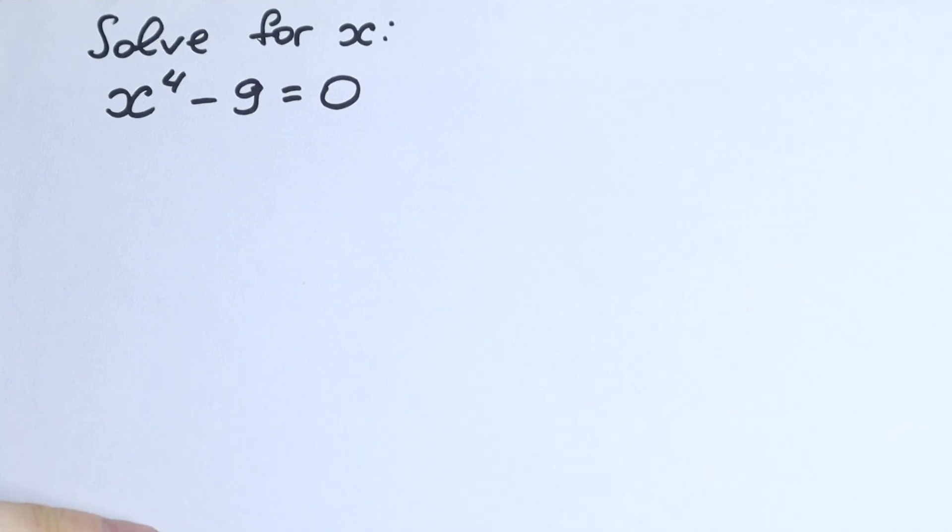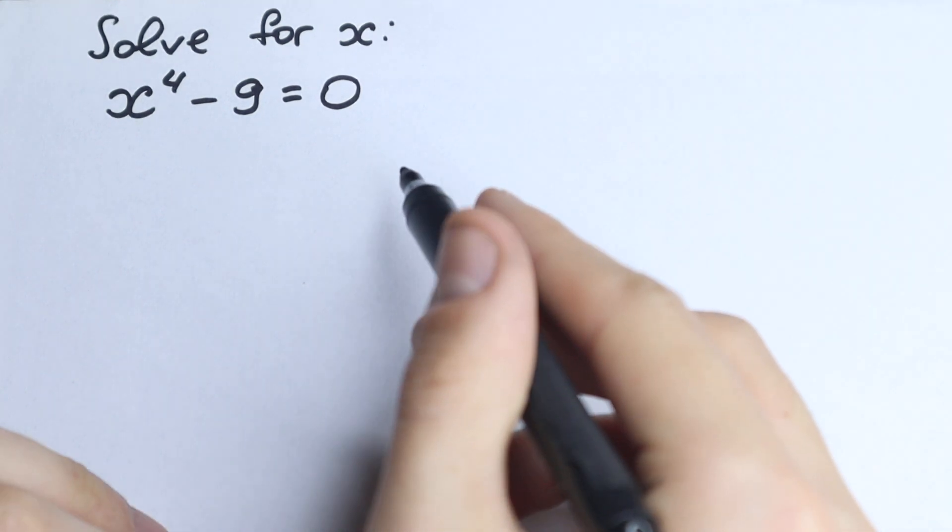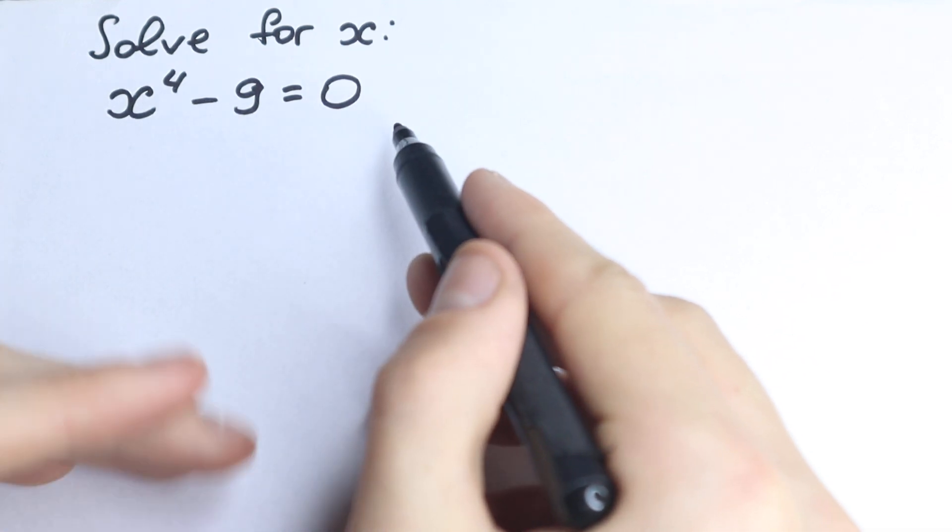Okay, happy to see you here on my channel Higher Mathematics. Really interesting quick challenge today: x to the fourth minus nine equals zero.